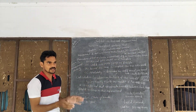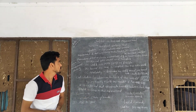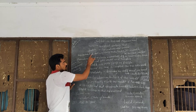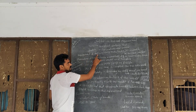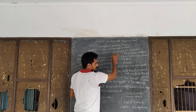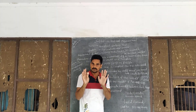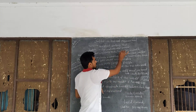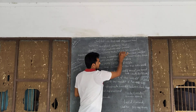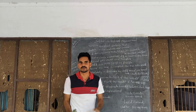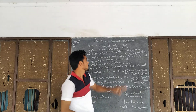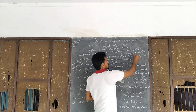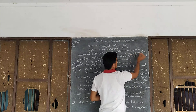Both the Harvard Step Test and Rockport Walking Test measure cardio-vascular fitness. The requirements for the test include: a running track — there are two types, 200-metre and 400-metre tracks. The 400-metre track is also known as the standard track. Other requirements are a stopwatch and an assistant helper.